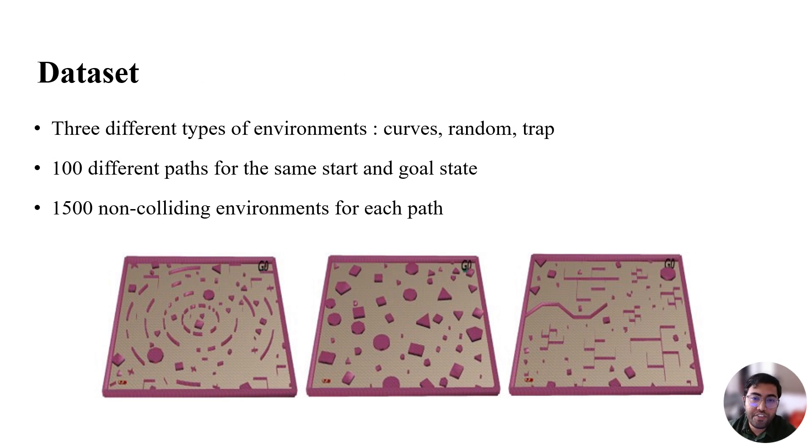We have generated three different types of environments for our experiments: curves, random and trap. The colored pixels here represent obstacles in the environment, while the white pixels represent free space. There are 100 different paths for the same start and goal position and 1500 non-colliding environments for each path.